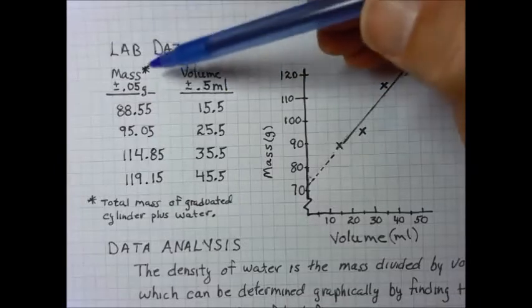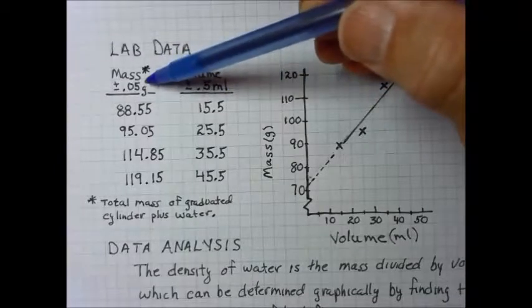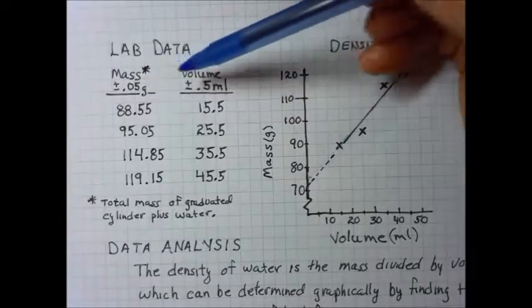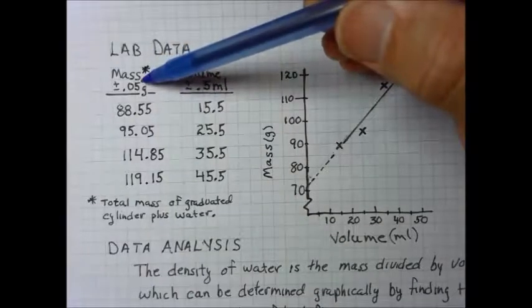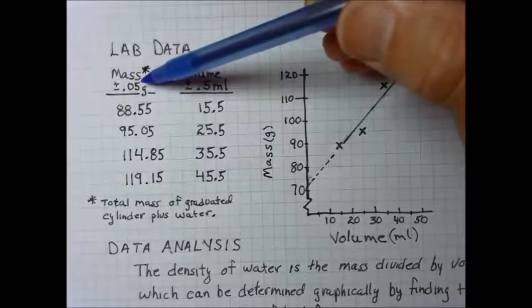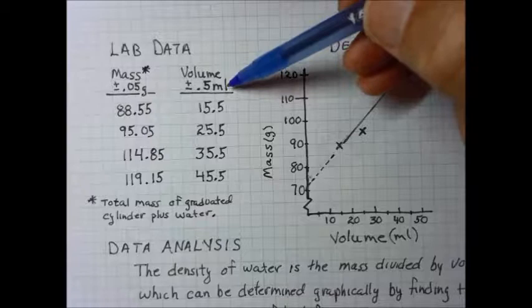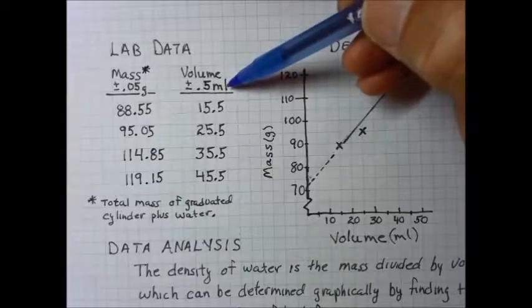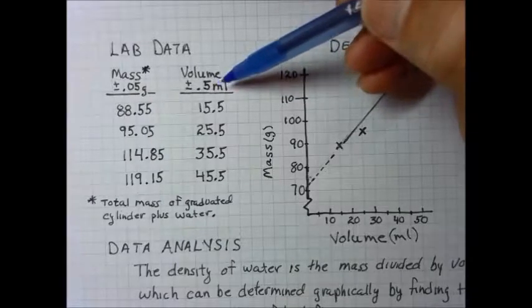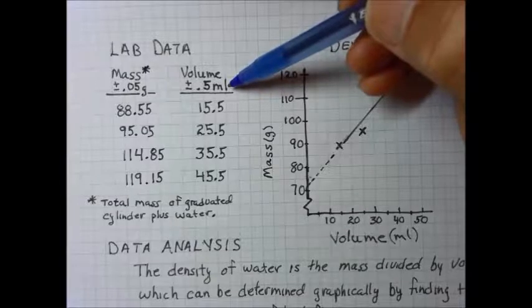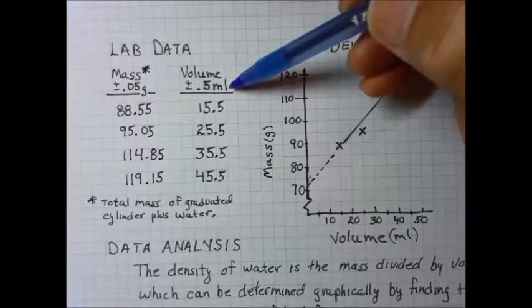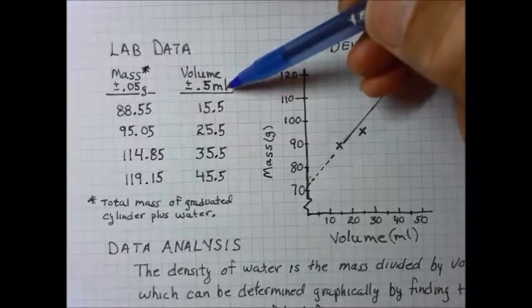And I have the precision of each of these instruments. We know that the triple beam balance, the precision of that instrument is plus or minus 0.05 grams. And the precision of this particular graduated cylinder that I was using was 0.5 milliliters. Its smallest graduation was one milliliter. So its precision was 0.5.